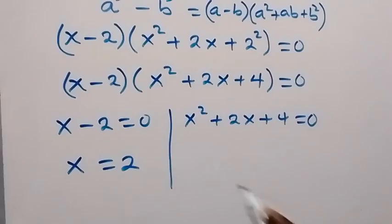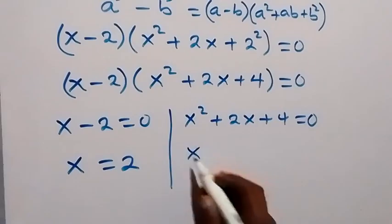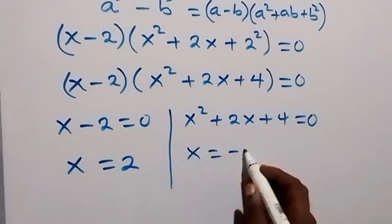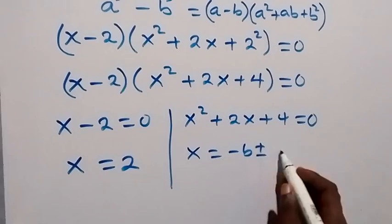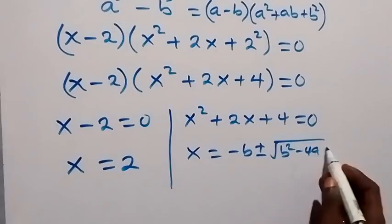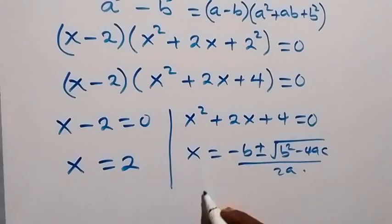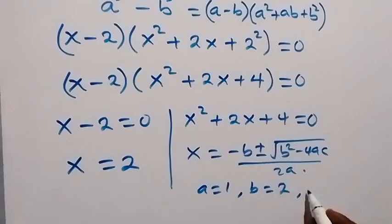Then on this side we have a quadratic equation and we can use the quadratic formula, that is x equals to minus b plus or minus square root of b square minus 4ac over 2a. And here a is 1, b is equal to 2, and c is 4, the constant.